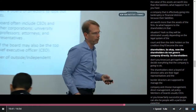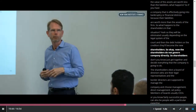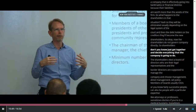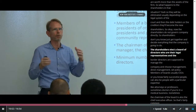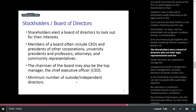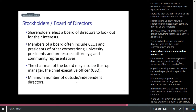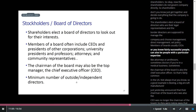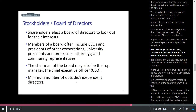The shareholders do not govern the company's directors directly. They don't just get together and decide everything that the company is trying to do. The shareholders elect the board of directors, who are their legal representatives. The board of directors is supposed to manage the company, choose management, direct management, and set policy. Members of the board are usually CEOs or fairly successful people — it can also be people with particular expertise like attorneys or professors, sometimes doctors if you're in a medical business.